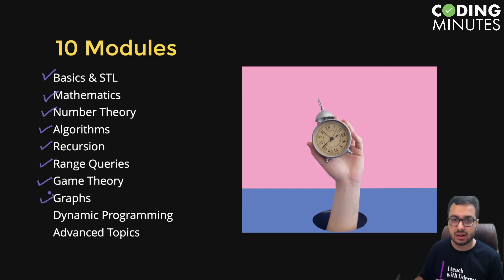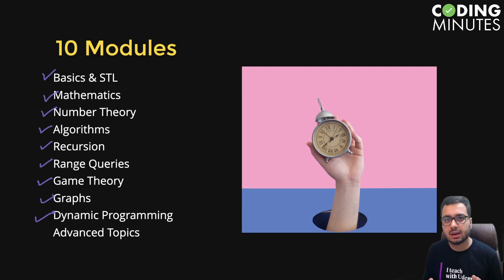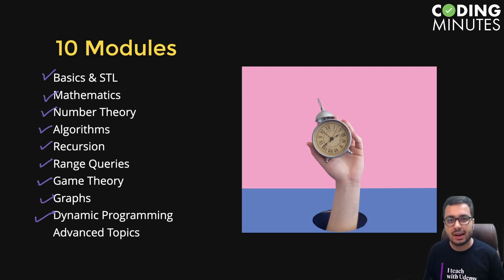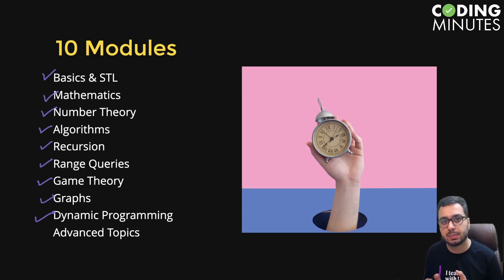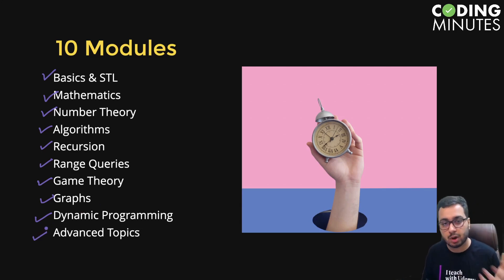We have Graph Algorithms with very rigorous coverage on graphs. We also have Dynamic Programming as a separate module because DP is an important topic and a lot of people have a fear of it. We cover DP in 10 to 12 hours — a very rigorous coverage discussing a variety of problems including digit DP, 2D DP, multidimensional DP, and SOS DP. There are also advanced topics like pattern matching and policy-based data structures.